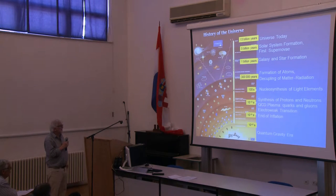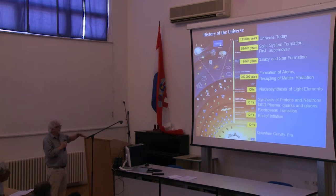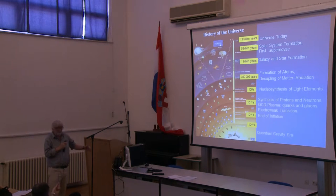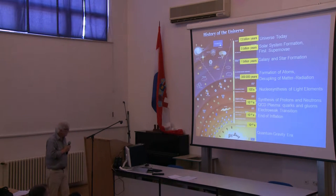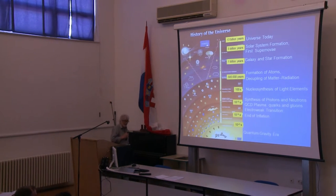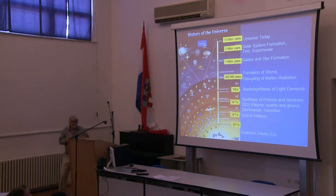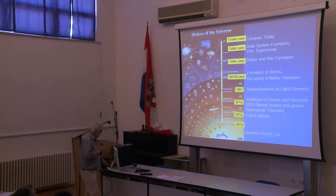Later on, we have a formation of objects like galaxies and stars and bigger structures. In about 5 billion years, we have solar system formation. About 13 billion years after the Big Bang, we have the universe as we see it today. It looks like a rather complicated structure, and many things happened. It's actually a very simplified presentation of the history of the universe.